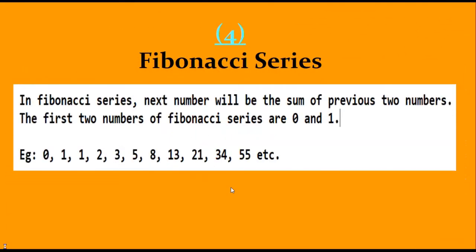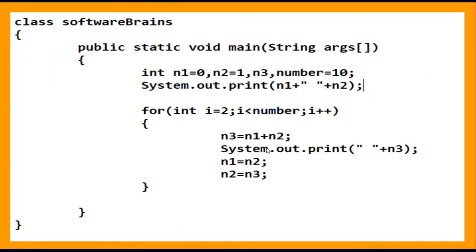The next program is the Fibonacci series. In this series, the next number is always the sum of the previous two numbers. The first two numbers are always 0 and 1. The series goes: 0, 1, 1, 2, 3, 5, 8, and so on. You need to write a program to print this series. The logic may look confusing at first but it is actually quite simple.